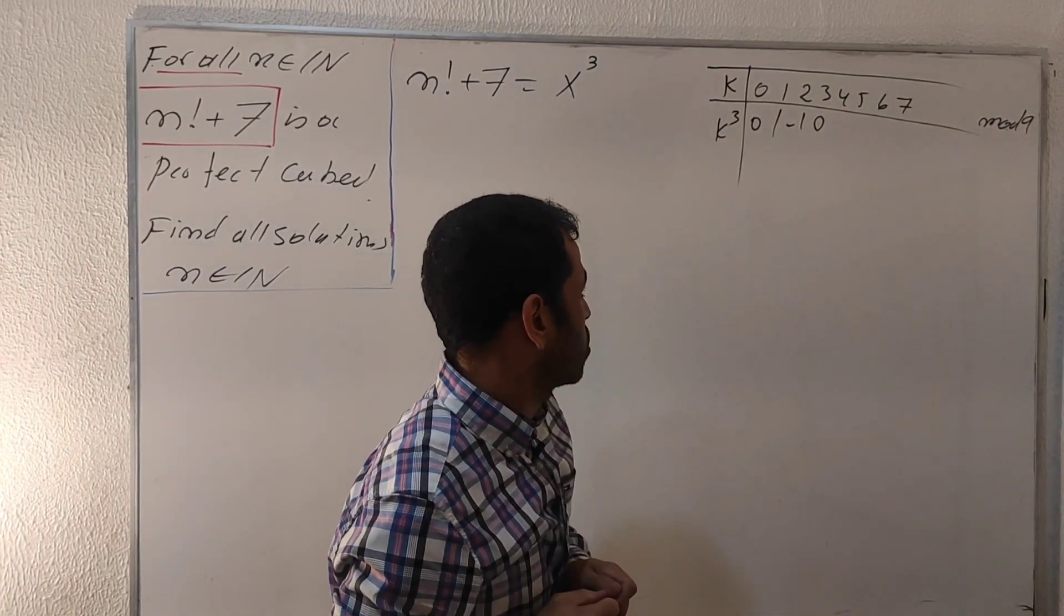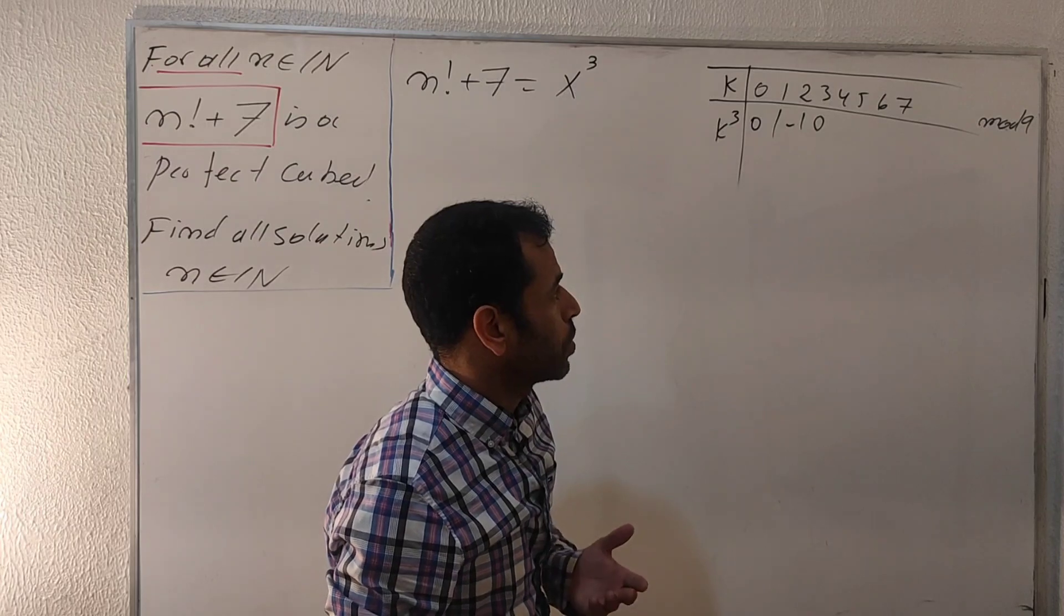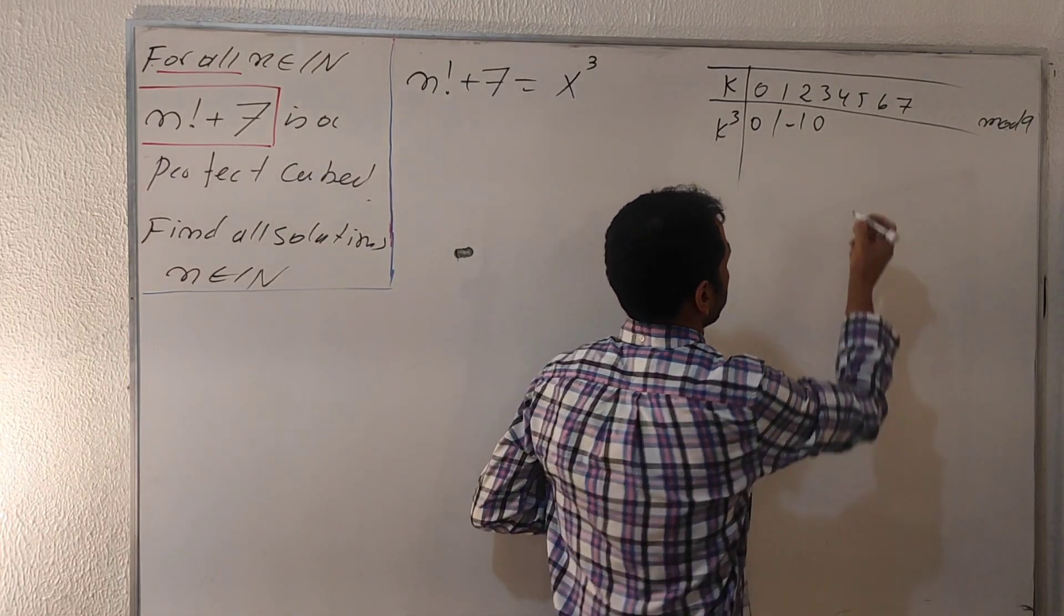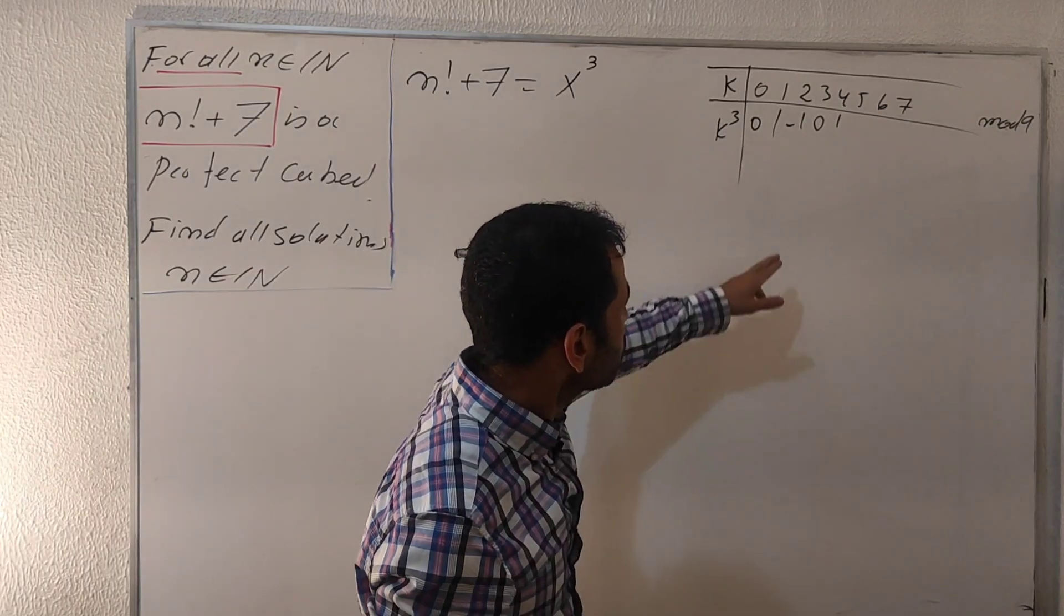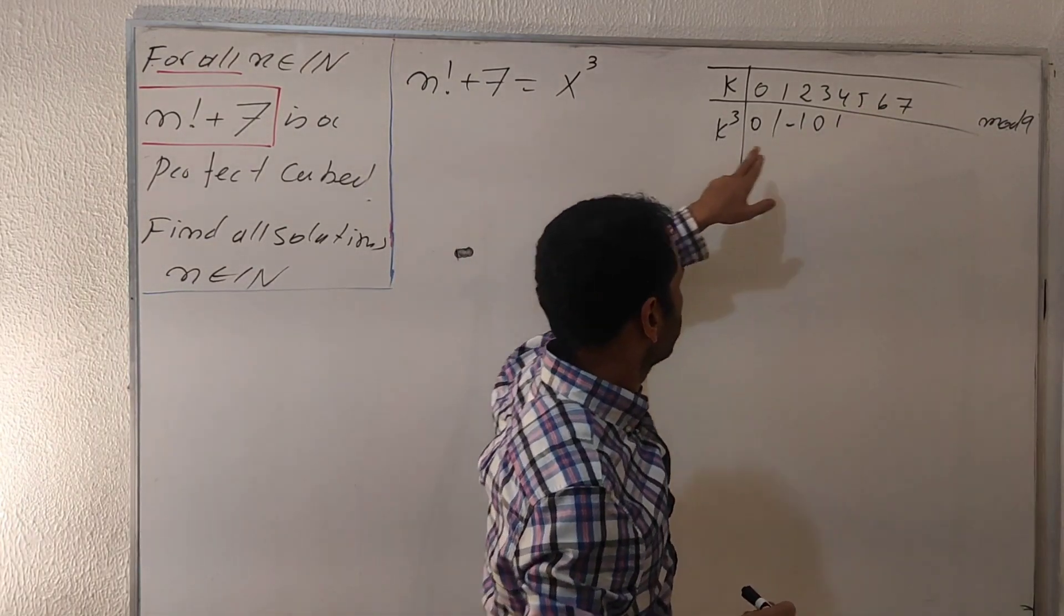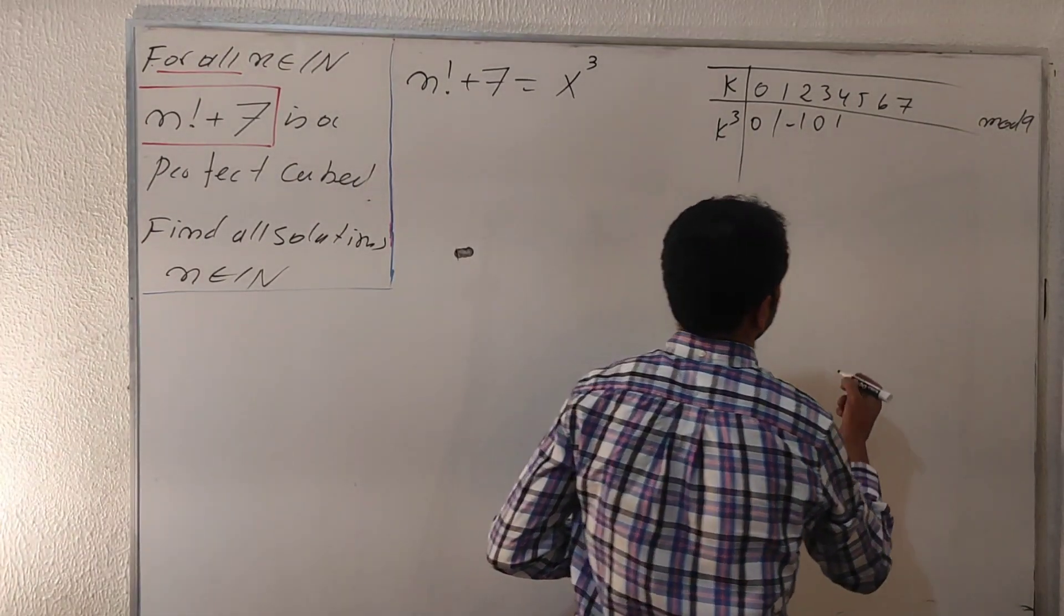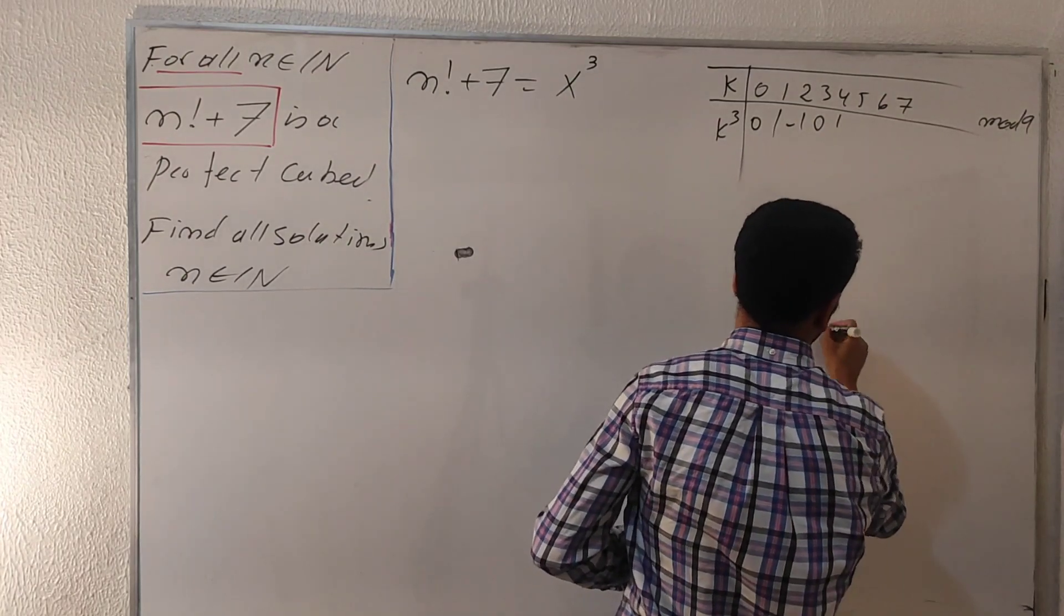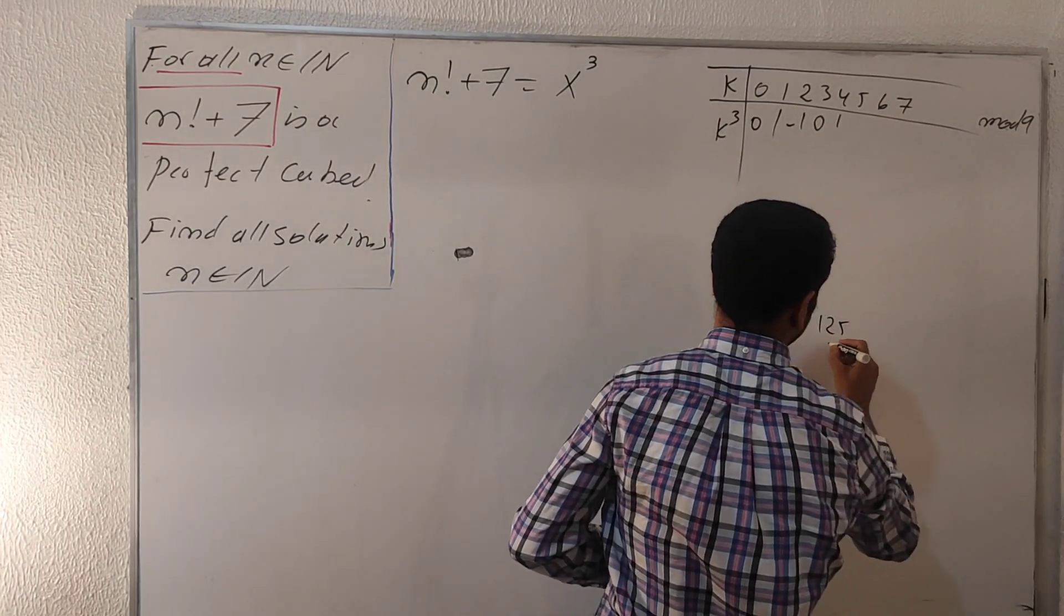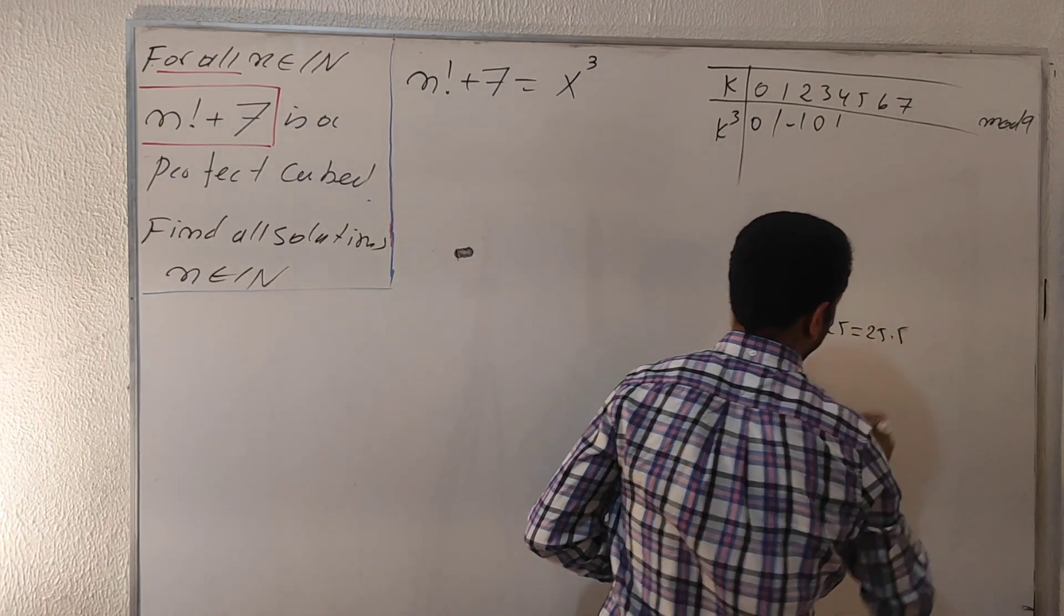Four cubed is 64. We know nine multiplied by 7 is 63, which means we have one more than 63. Let's check five. Five cubed is 125. It's hard to do it in this way, so let's use another trick to reduce this to mod 9. We have 125, which is 25 multiplied by five.